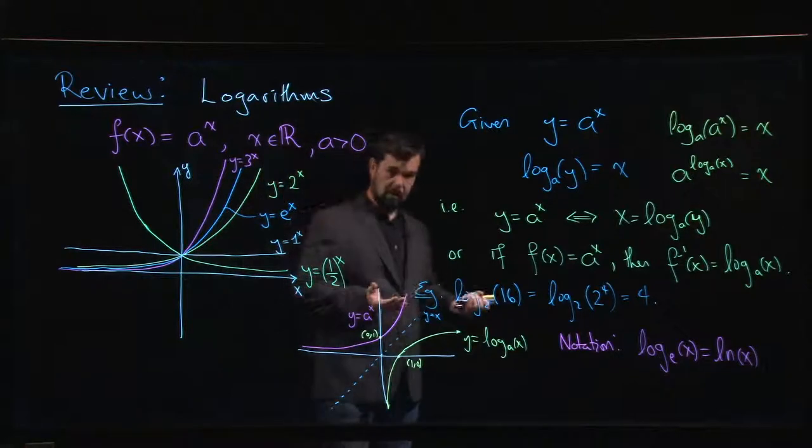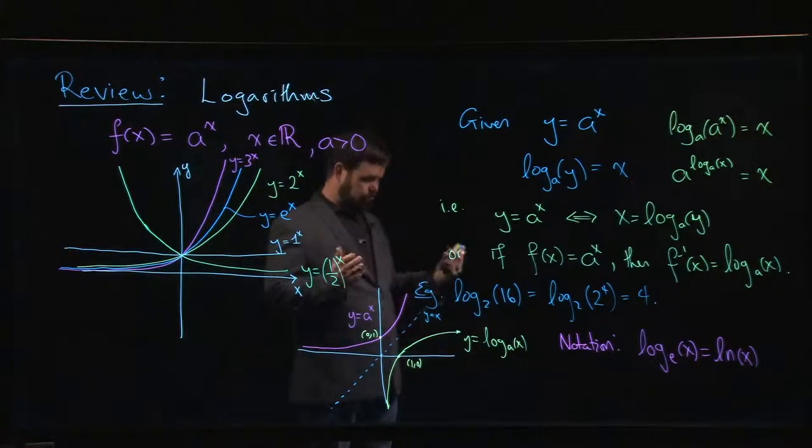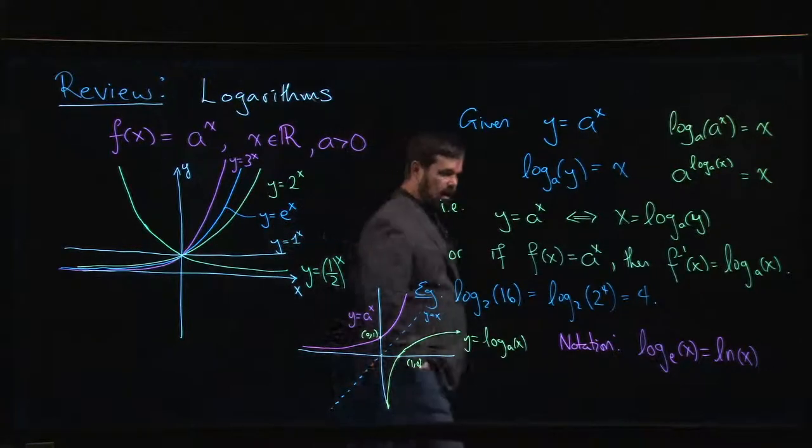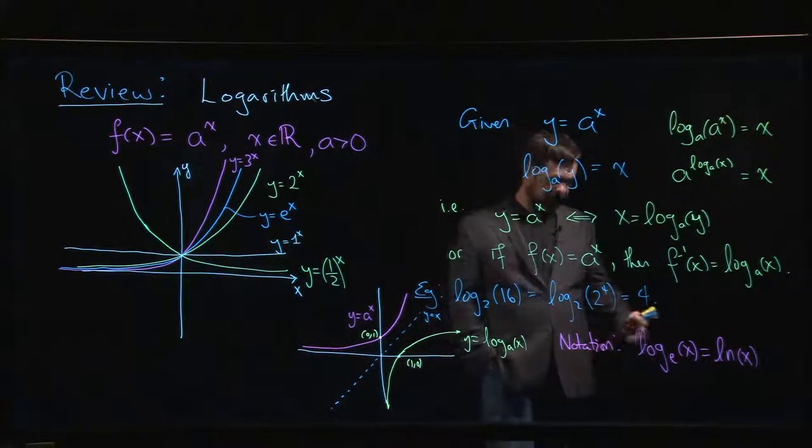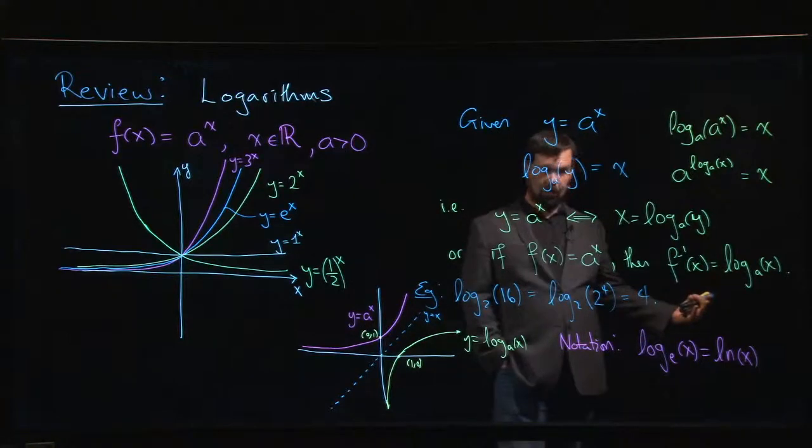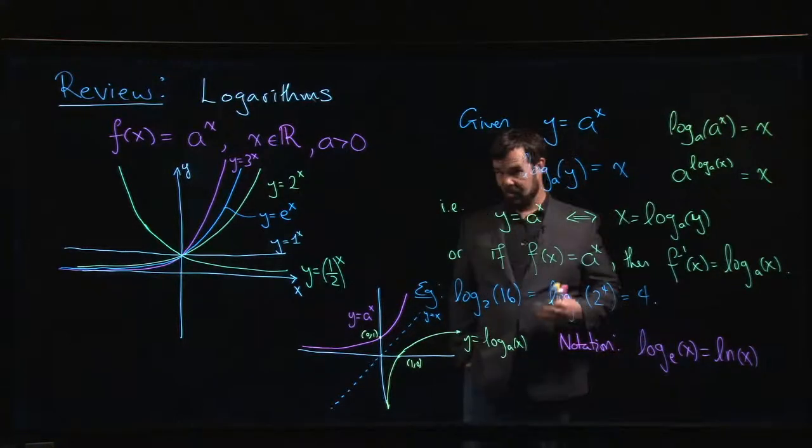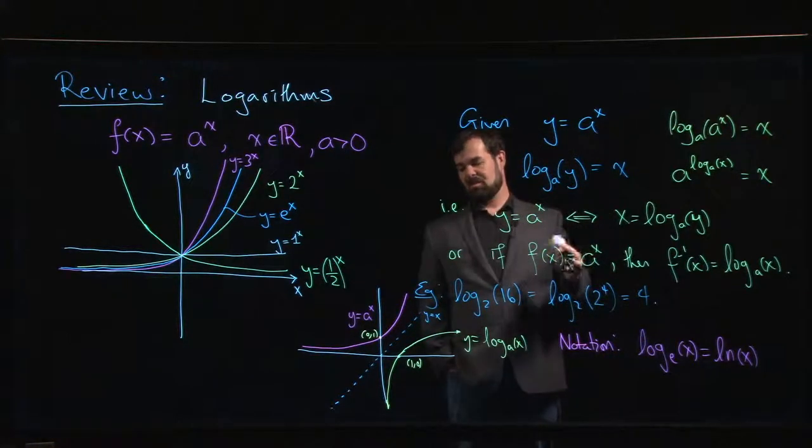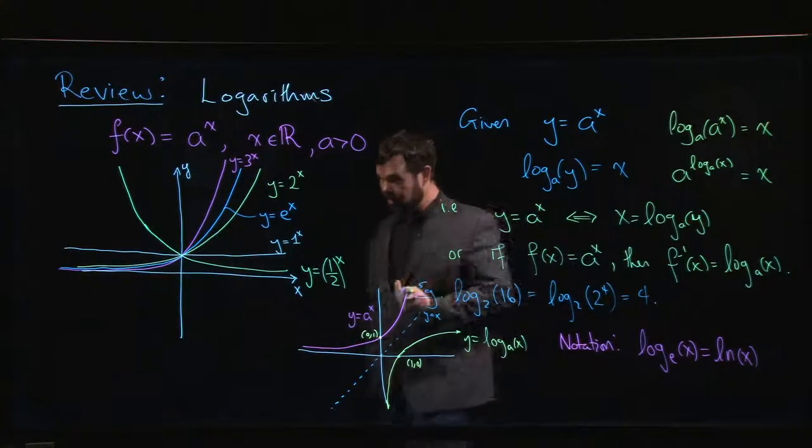But in the sciences, if you write log with no base, sometimes that's interpreted as base 10. So if you see log without a base, you really need to ask yourself what the context is. Am I in kind of a math context, and then it's probably base e? Am I in a science context, in which case it's probably base 10?